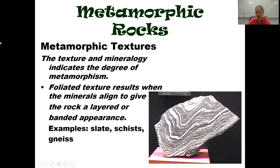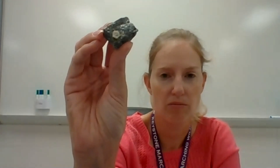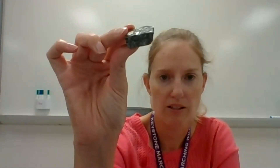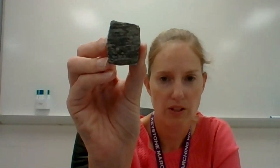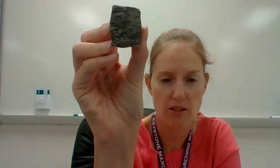Slate, schist, and gneiss all have a layered or banded appearance, though sometimes the layers are obvious and sometimes not. Slate has very fine layers. Schist is a little shiny because of mica in it, and also has some layering. Gneiss is the most obvious — you can see those lines going across. All three have foliated texture because of those layers or bands.